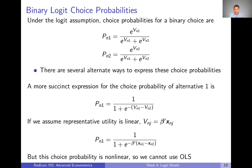There are some alternative ways to express these choice probabilities that make it a little more clear how we're actually going to estimate something here. A more succinct expression — if we just think about alternative one — we really only have to think about one alternative, because the other one is just one minus that. So once we have one choice probability, we get the other one for free. If we take the first expression and divide the numerator and denominator by the numerator, we get a simpler expression where v1 only shows up once instead of twice.